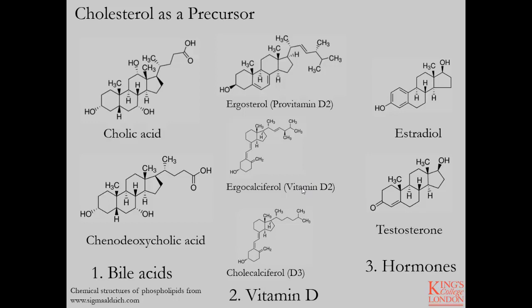Cholesterol acts as a precursor — one of its main biological functions is the formation of other molecules in the body which have biological action but require the sterol ring as their base structure. These include bile acids. Here you can see two examples: cholic acid and chenodeoxycholic acid. The conserved ring structure is present; however, there is no desaturation, but you do see variations on the side chains and the presence of a carboxylic acid group.